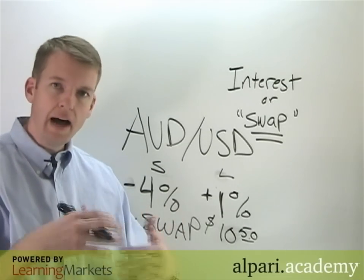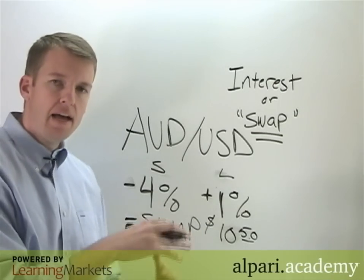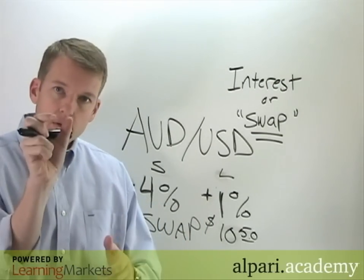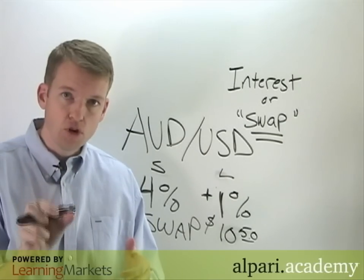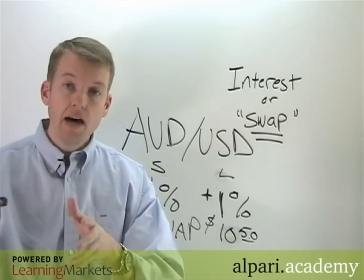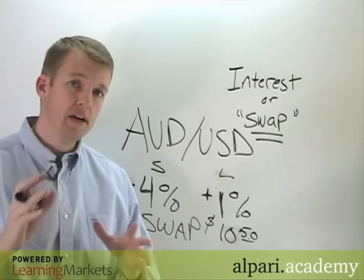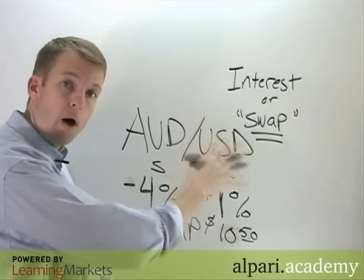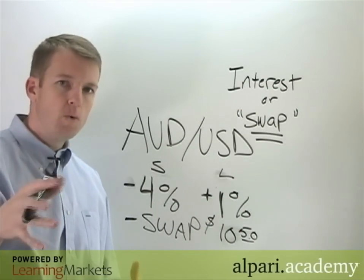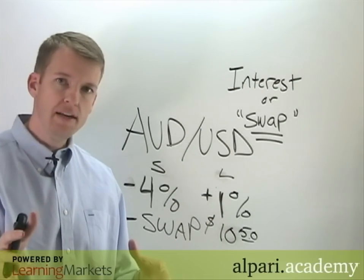Swap is pretty easy to understand, and you can see it on your total position. When you're looking at the MetaTrader 4 platform, there's a column in the terminal under the trade tab for swap, so you can see how much you've made or paid, and it nets out into your overall profits. But this goes beyond that, because there are a lot of strategies built around the fact that swap even exists. Let's talk about that next.